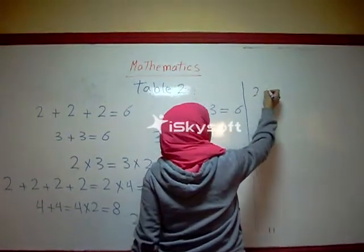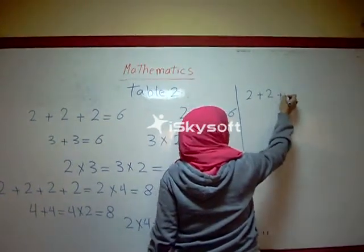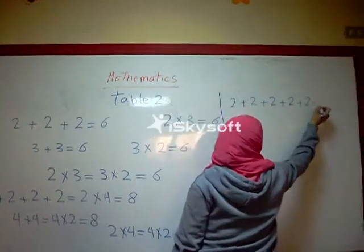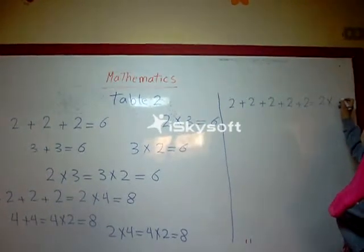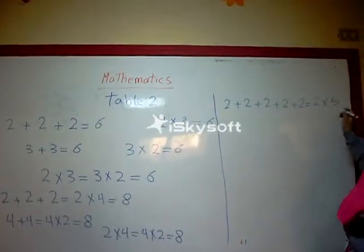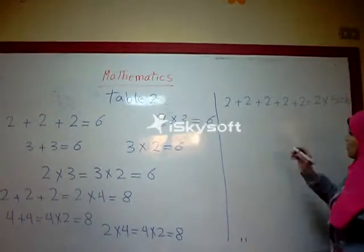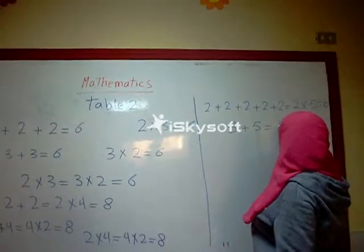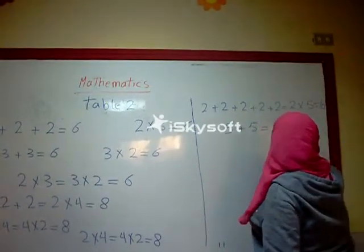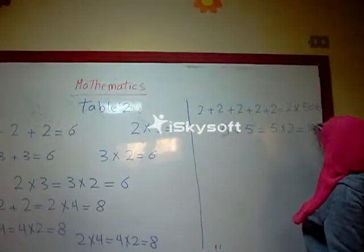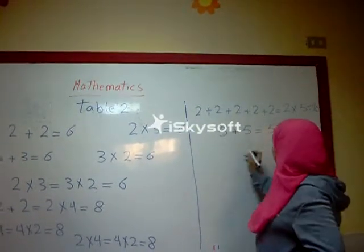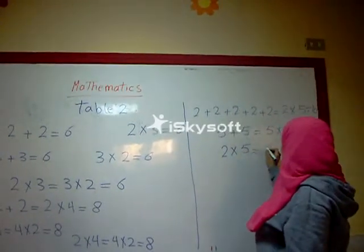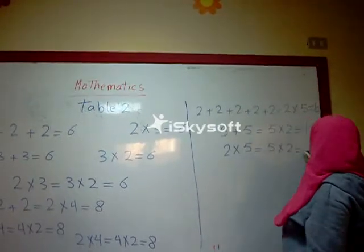Two plus two plus two plus two plus two equals two times five equals ten. Five plus five equals five times two equals ten. Then we get two times five equals five times two equals ten.